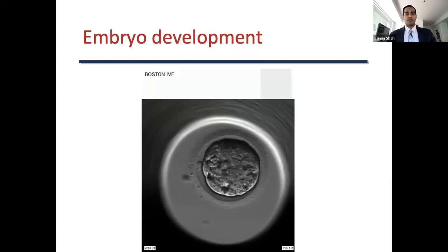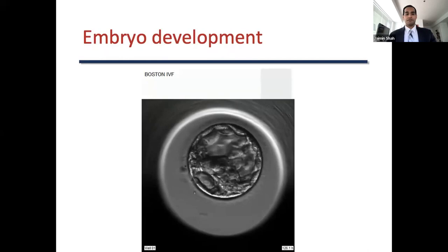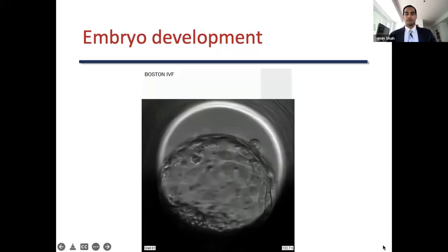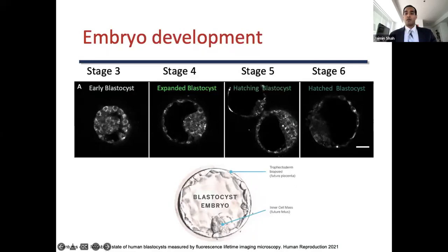Now it's slowly developing into the blastocyst stage, or a day five embryo. Once an embryo reaches day five, or the blastocyst stage, the embryologist will grade an embryo using the Gardner morphology criteria, looking at the embryo stage and evaluating the inner cell mass and trophectoderm. The inner cell mass develops into the fetus, and the trophectoderm develops into the placenta.